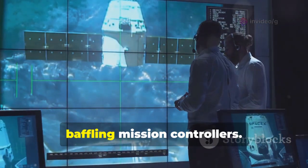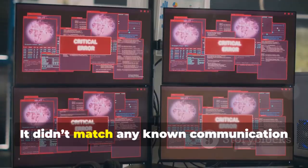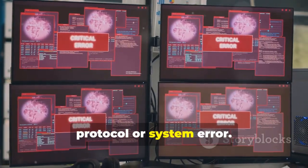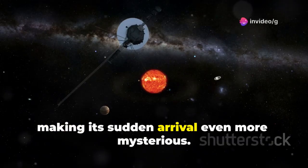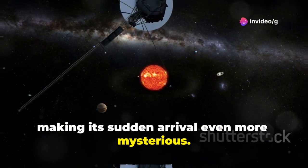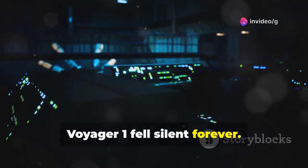The signal was highly structured, baffling mission controllers. It didn't match any known communication protocol or system error. The burst followed three days of silence, making its sudden arrival even more mysterious. Afterward, Voyager 1 fell silent forever.